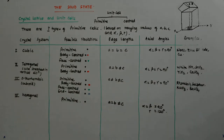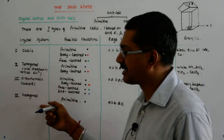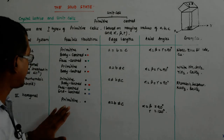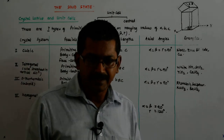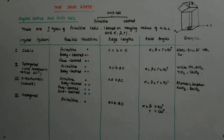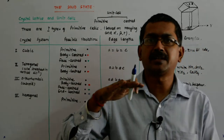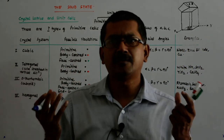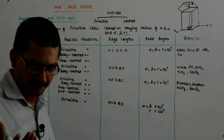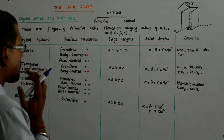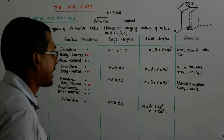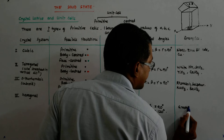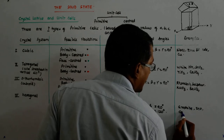We have not taken the hexagon as the primitive cell, but we have taken this shape as primitive — because three such units will form a hexagonal prism. It's not a hexagon, it's a hexagonal prism. A prism has two surfaces parallel to each other. This hexagonal prism gives you graphite, zinc oxide, and cadmium sulfide.